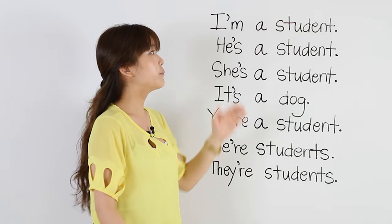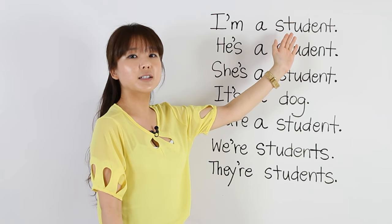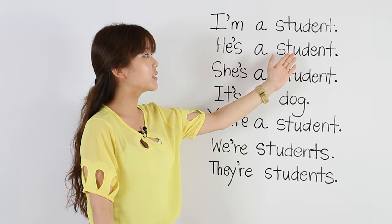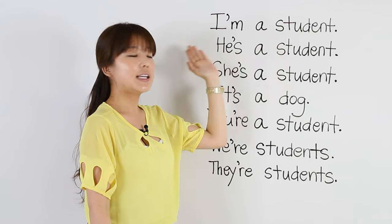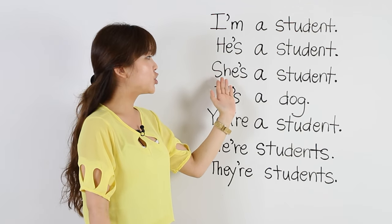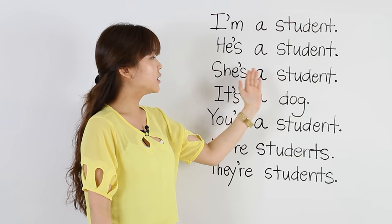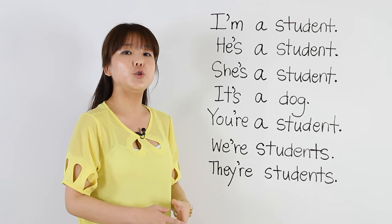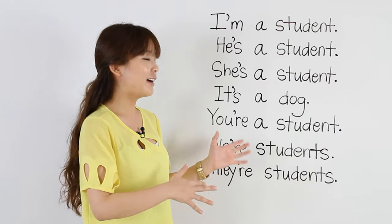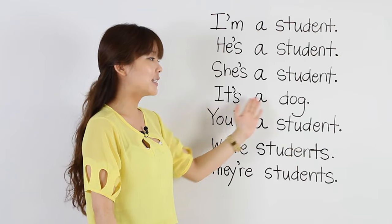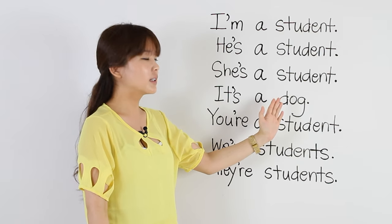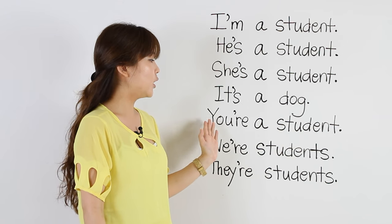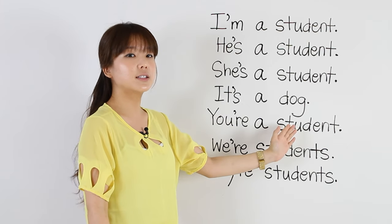The next one also sounds like one word — he's a. He's a student. Please repeat: He's a student. Same thing: She's a student. Please repeat: She's a student. Now remember, 'it' is only used for a place, a thing, or an animal, so we say it's a dog. Please repeat: It's a dog. Next: You're a student. Please repeat: You're a student.